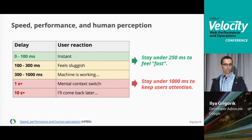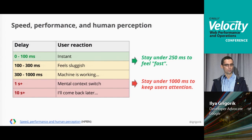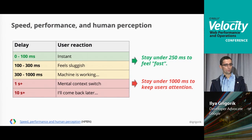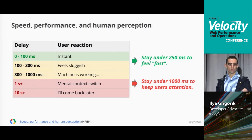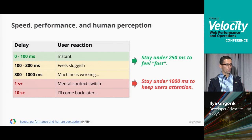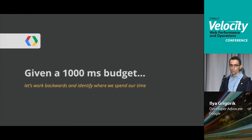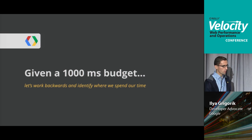You search for something, land on a page, click on a link, it renders within 1,000 milliseconds — that's the kind of fluid experience we want. Ideally we'd be even faster, but let's start with this concrete goal of 1,000 milliseconds and work backwards. What are the technical challenges of doing a page render on the web today in 1,000 milliseconds?